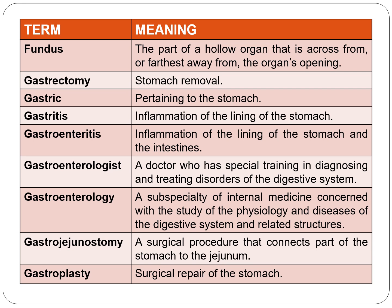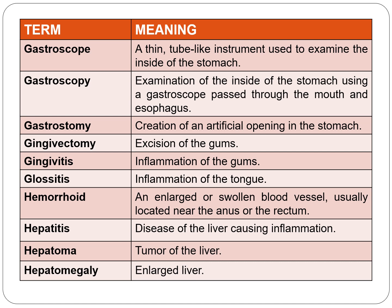Gastroenterostomy is a surgical procedure that connects part of the stomach to the jejunum by making an artificial opening. Gastroplasty — 'oplasty' means surgical repair — so gastroplasty is surgical repair of the stomach. A gastroscope is a thin tube-like instrument used to examine the inside of the stomach.